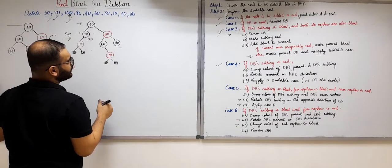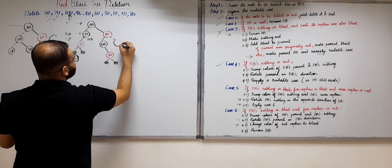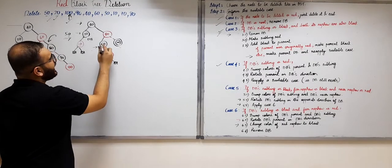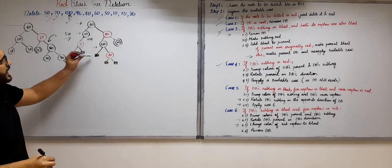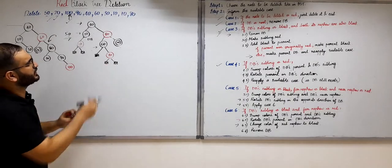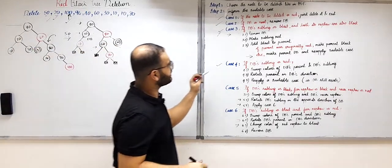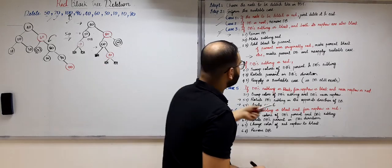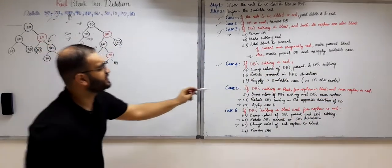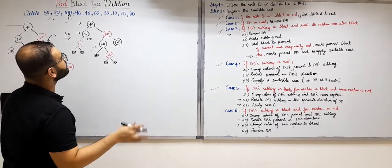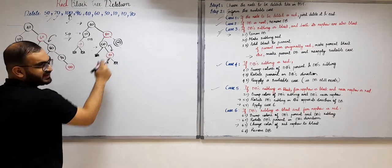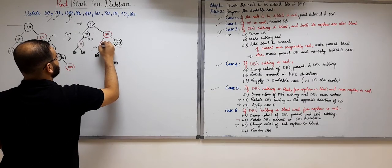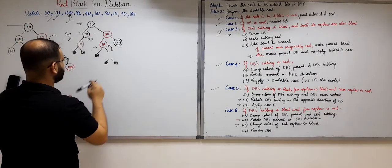Now let us delete 90. Node 90 will become double black because it will be replaced by its child, which is an external node. The sibling of 90 is 60, which is black. The far nephew (child of 60 on the far side) is an external node and is black, while the near nephew (closer to the double black) is red. So this falls into Case 5 — double black sibling is black, far nephew is black, and near nephew is red. We swap the colors of the double black's sibling 60 and the near nephew 70.